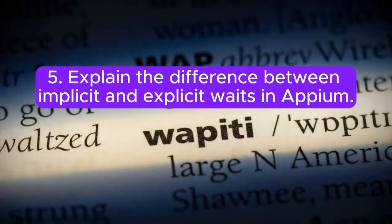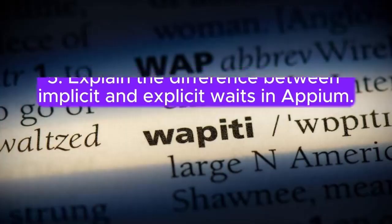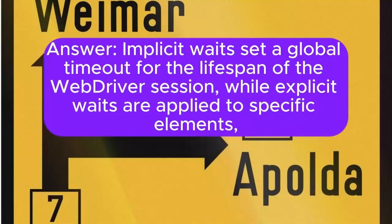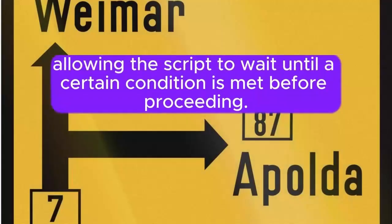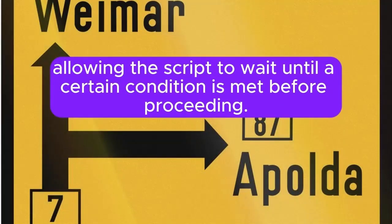5. Explain the difference between implicit and explicit waits in Appium. Implicit waits set a global timeout for the lifespan of the WebDriver session, while explicit waits are applied to specific elements, allowing the script to wait until a certain condition is met before proceeding.